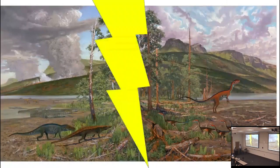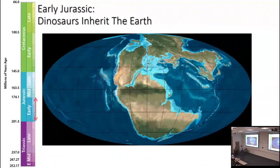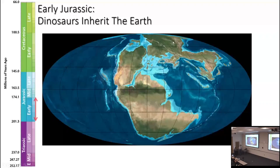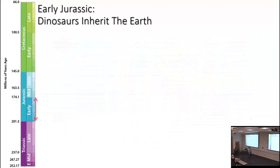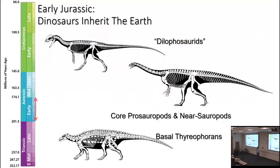Then something big happens — not lightning, but volcanoes. The Central Atlantic Magmatic Province erupts as Pangea begins to tear itself apart, and the world of the late Triassic ends. We move to the early Jurassic when dinosaurs actually inherit the Earth. But at this time, it's still largely Pangea, and not surprisingly the dinosaurs we find in South Africa, the American Southwest, and China are still pretty similar to each other — very similar dinosaurs in all these regions, including Antarctica. This is when the Dilophosaur grade shows up.